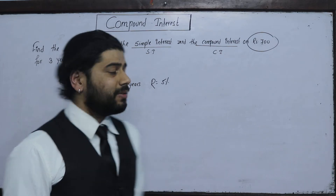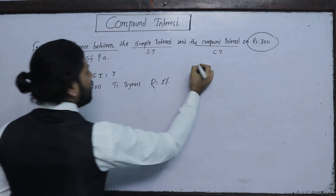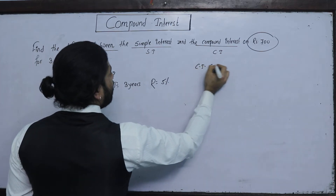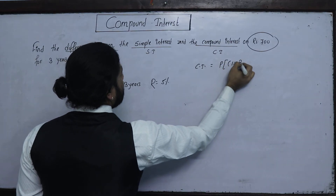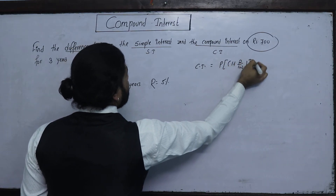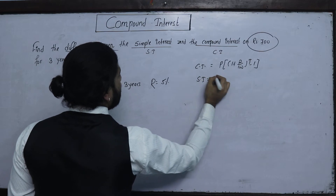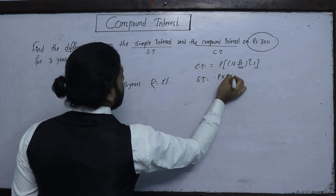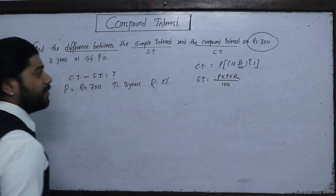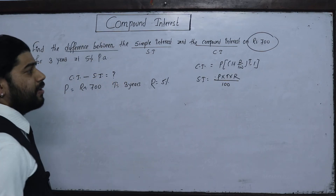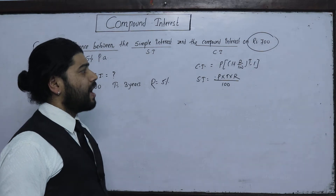The formula for compound interest is: CI = P × [(1 + R/100)^T − 1]. The formula for simple interest is: SI = P × T × R / 100. Here P is the principal — the amount of investment or loan amount.